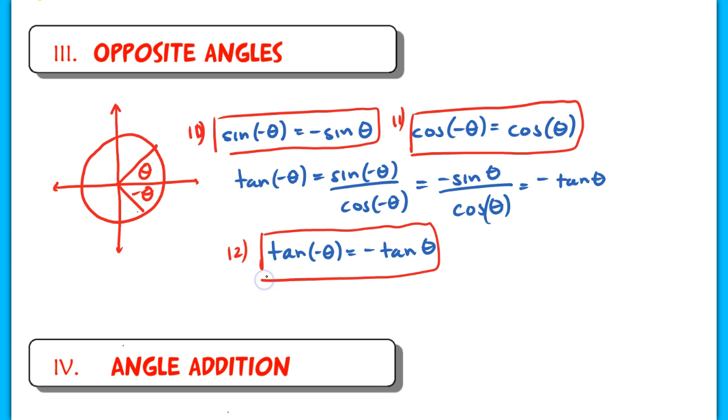Okay, so that very brief proof here is going to conclude part three for opposite angle identities.